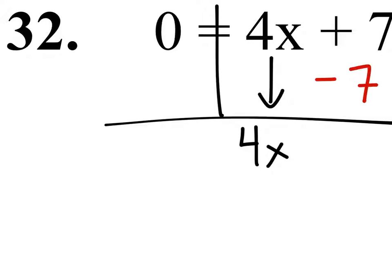So we really just need to get rid of whatever's being added or subtracted. So in this case, we'll subtract 7 from both sides. We got negative 7 equals 4x.